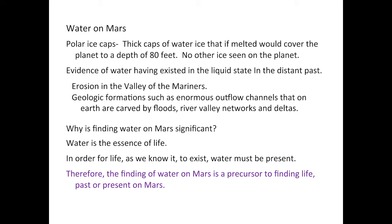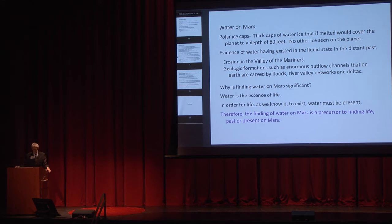These polar ice caps - if all the ice in those polar ice caps melted, it would cover the planet with a depth of about 80 feet of water. There's a lot more water on Earth - 70% of Earth is covered with water and the depths would be much greater. But Mars is so cold that the ice caps are frozen all the time. There's other evidence, though, of water having existed in a liquid state on Mars in the deep past. There's erosion in the Valley of Marineris. There are geologic formations such as enormous outflow channels that on Earth are caused by floods, river valley networks, and deltas. The same patterns are seen on Mars, and so that would indicate that in the past there may have been water on Mars. That would mean that sometime in the past, Mars would have been warmer.